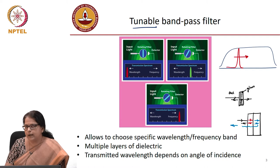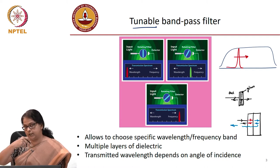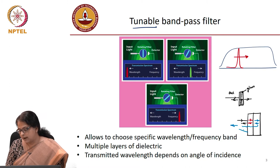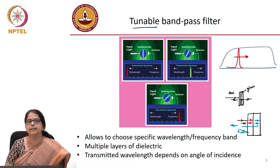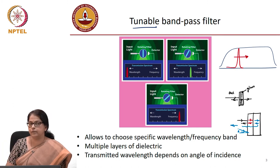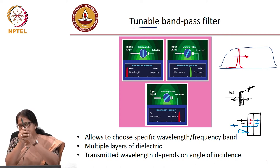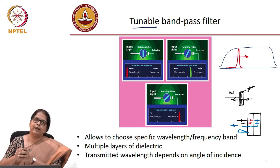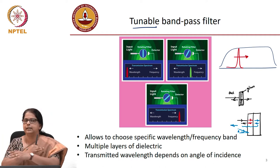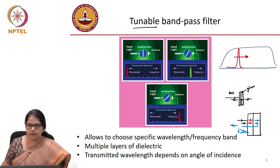In electromagnetics, the reflection coefficient is a function of angle of incidence. If light goes in at a certain angle, the phase of the reflection coefficient depends on that angle, which means that by rotating the dielectric block, you can change the wavelength that gets transmitted and reflected. That is how a tunable bandpass filter is made.